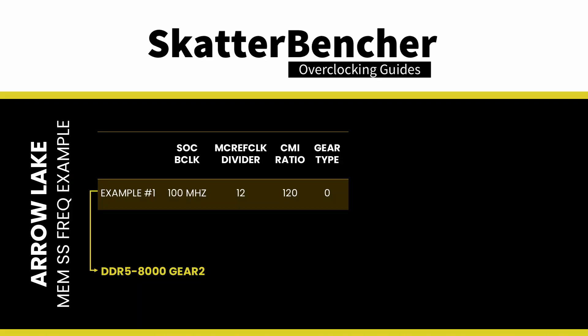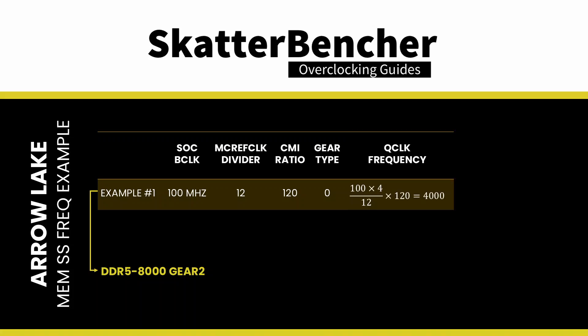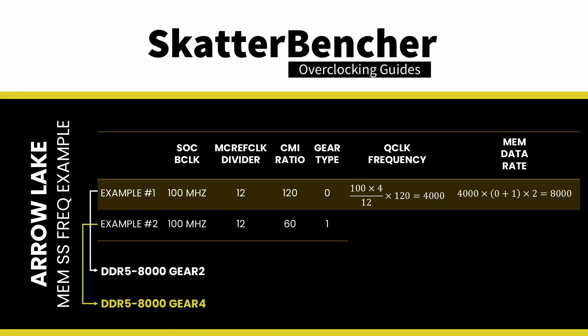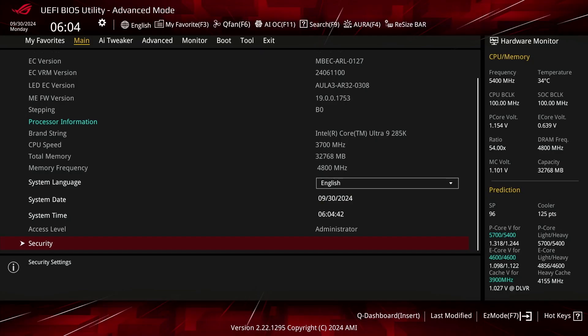Let's look at an example. In the first example, we use a memory controller reference clock of 33 MHz, gear 2, and a CMI ratio of 120. That gives us a memory controller frequency of 4 GHz and a DDR5-8000 data rate. In our second example, we change the CMI ratio to 60 and use gear 4. Now we still have DDR5-8000 system memory, but the memory controller is running at 2 GHz instead. In practice, configuring the memory subsystem frequencies is much more simplified.